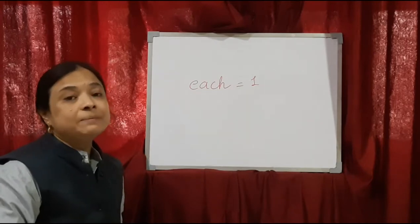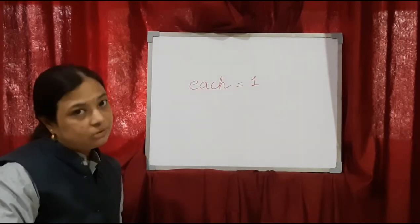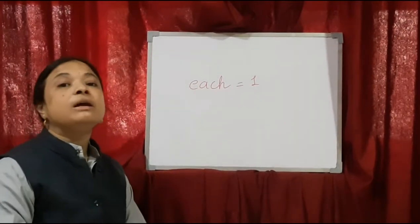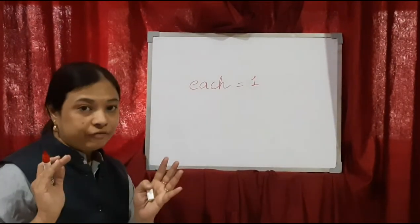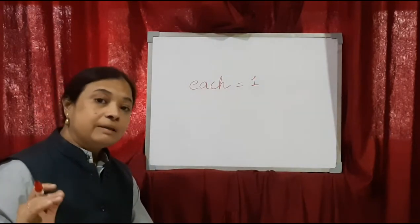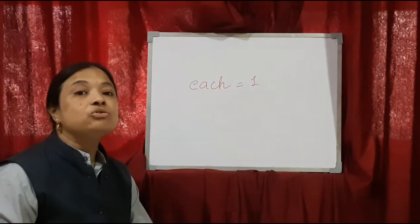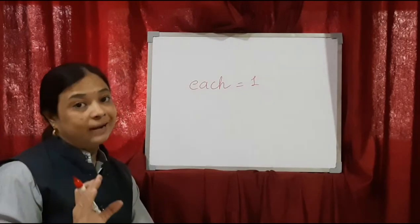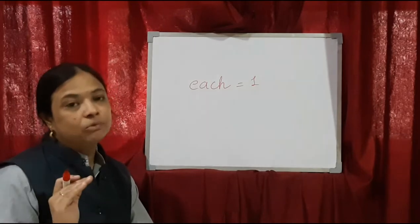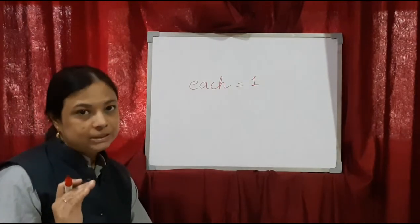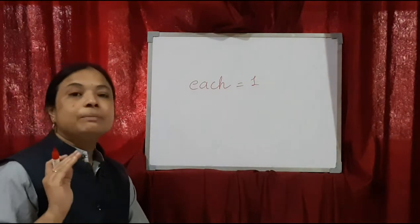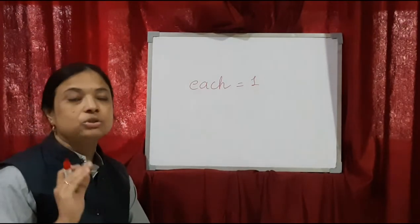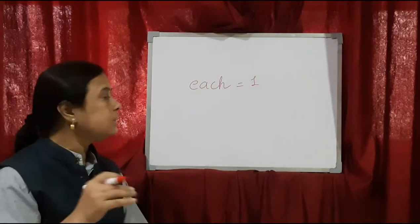Now what is the difference between story sums of multiplication and story sums of division? In story sums of multiplication, we were finding the total number of things. Here in division sums, we are going to find out how many of a particular thing is in one group. So the answer of division is always small; the answer of multiplication is always big, because multiplication is repeated addition and division is repeated subtraction.